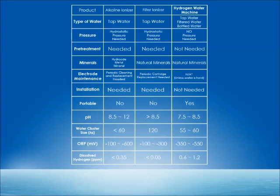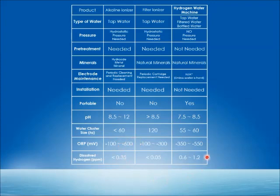In a direct comparison between alkaline ionizer, filtered ionizer, and our hydrogen water machine: our water cluster size is much smaller than filtered ionizer, and a little smaller than alkaline ionizers. We have a high negative ORP, which can be achieved through alkaline ionizers as well, but you don't achieve the same amount of dissolved hydrogen as our hydrogen water machine. Our hydrogen water machine is clearly the best in terms of high hydrogen content.